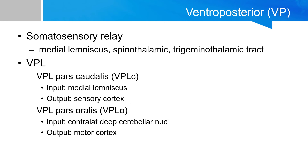The ventral posterior nucleus is subdivided into the ventral posterior medial (VPM) and ventral posterior lateral (VPL) nuclei. These are somatosensory relay nuclei that relay information to the primary somatosensory cortex. The VPL receives input from the afferent spinal and spinothalamic tracts and medial lemniscus, while the VPM receives input from the afferent trigeminal lemniscus. The subgroups of the VPL are not high yield for the exam.